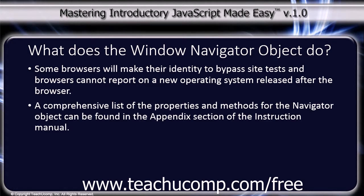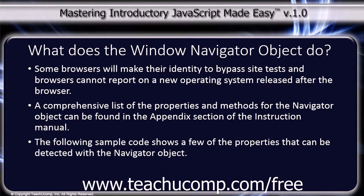A comprehensive list of the properties and methods for the Navigator object can be found in the appendix section of the instruction manual. The following sample code shows a few of the properties that can be detected with the Navigator object.